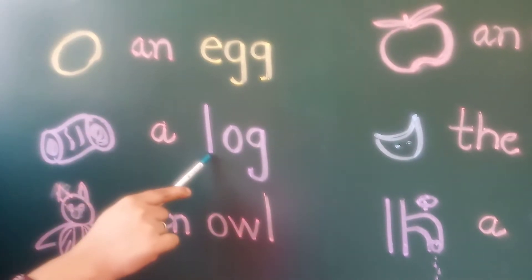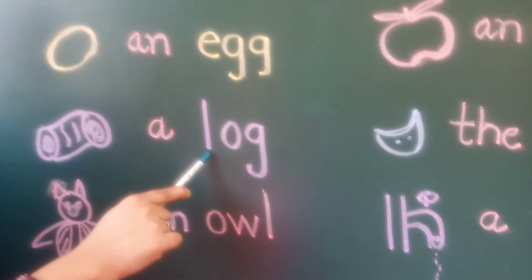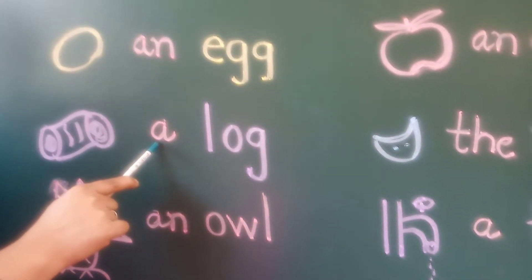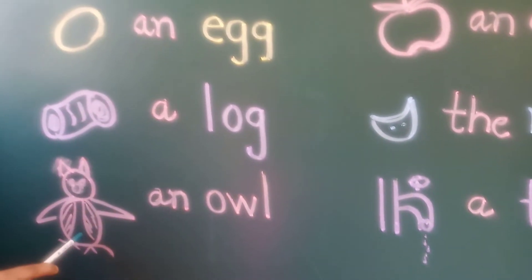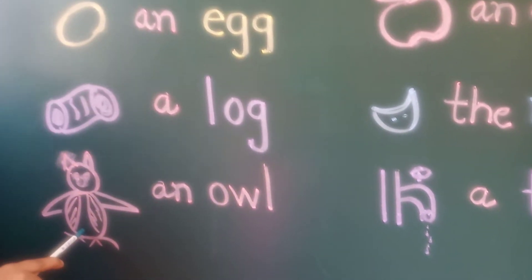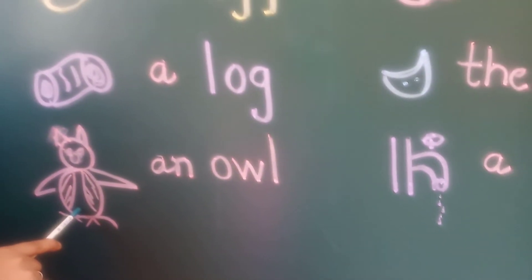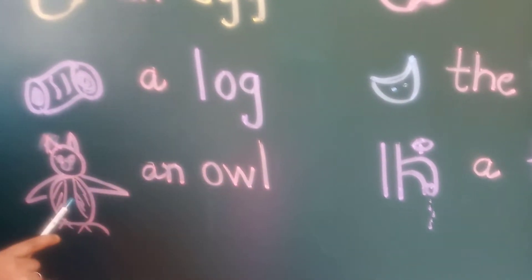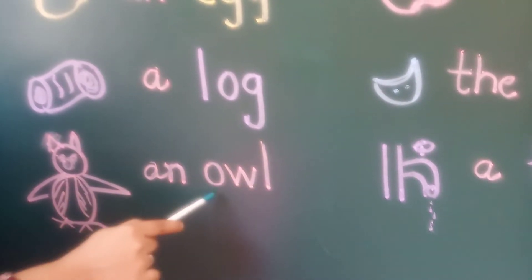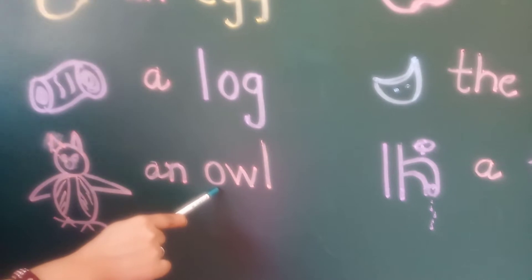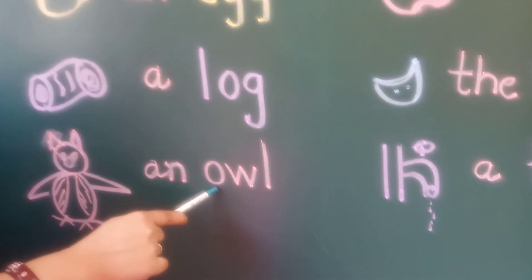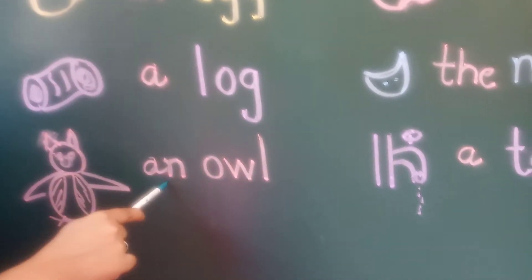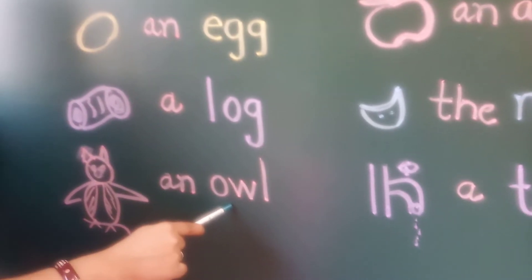Which picture is this? Owl. O is a vowel. In front of vowels we use 'an'. So we write: an owl.